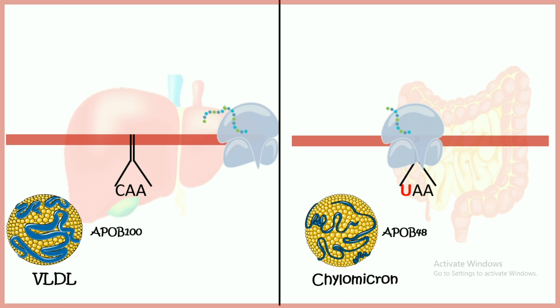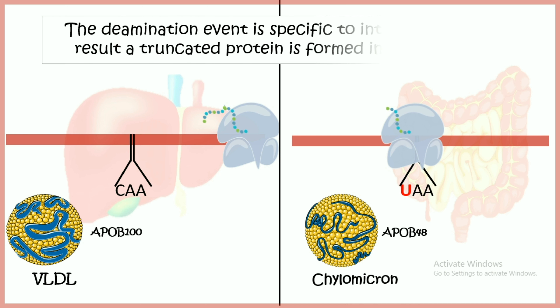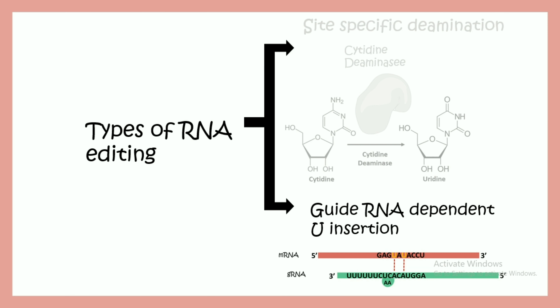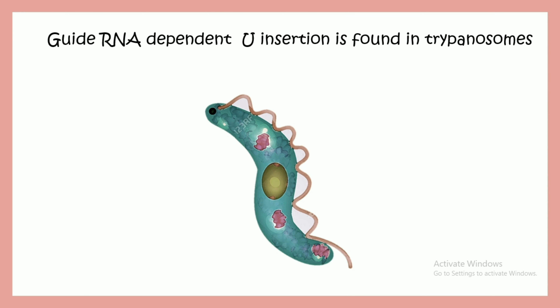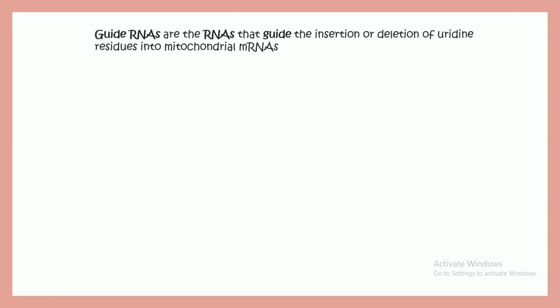Now let's look at guide RNA-dependent uracil insertion. This is found in trypanosomes. Guide RNAs are the RNAs which guide the insertion or deletion of residues in a site-specific manner, especially found in mitochondrial RNAs of trypanosomes.